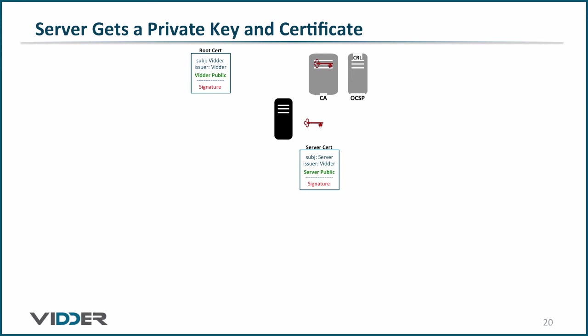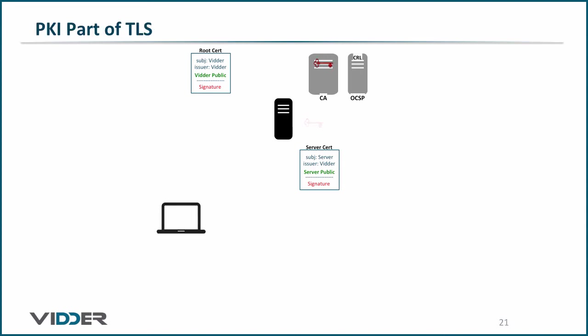With our public key infrastructure in place, let's take a look at how it's typically used on the internet. Note that what you're about to see is not exactly how PKI is used for the software-defined perimeter, because it will lack mutual authentication. A later video will fully explain that handshake in detail. Let's look at the PKI part of a simple TLS handshake. Before the handshake can begin, the client must have downloaded the root certificate of the public key infrastructure. Note that browsers download hundreds of root certificates as part of the browser installation process, and we'll see how that's a significant problem for PKI.